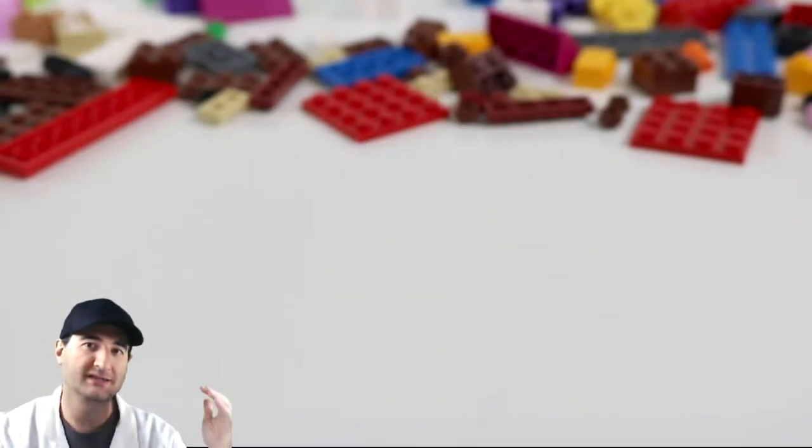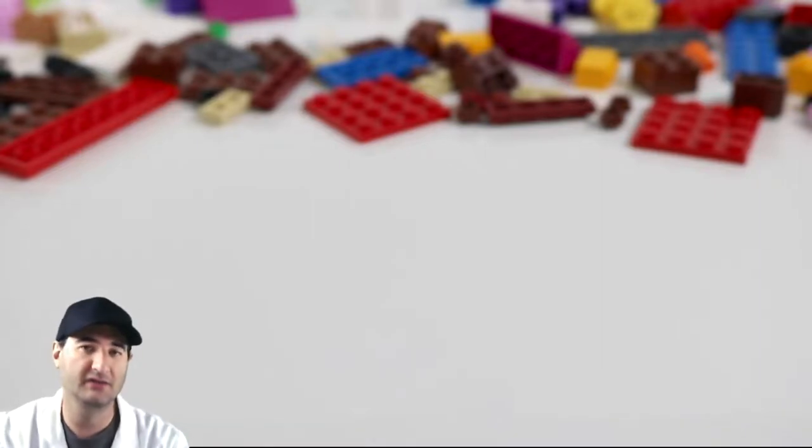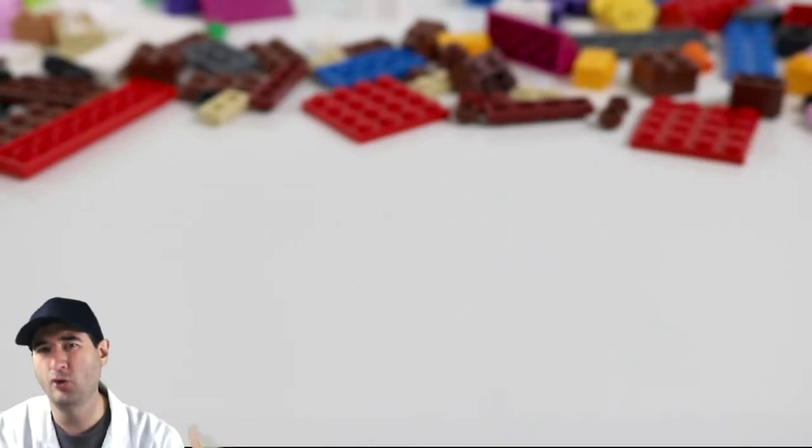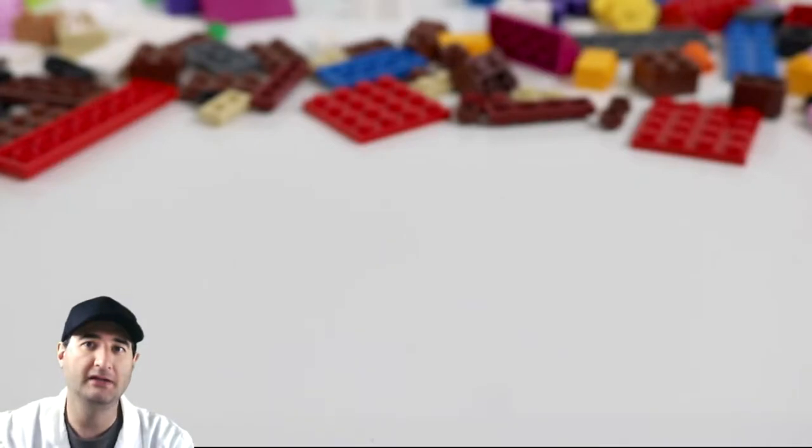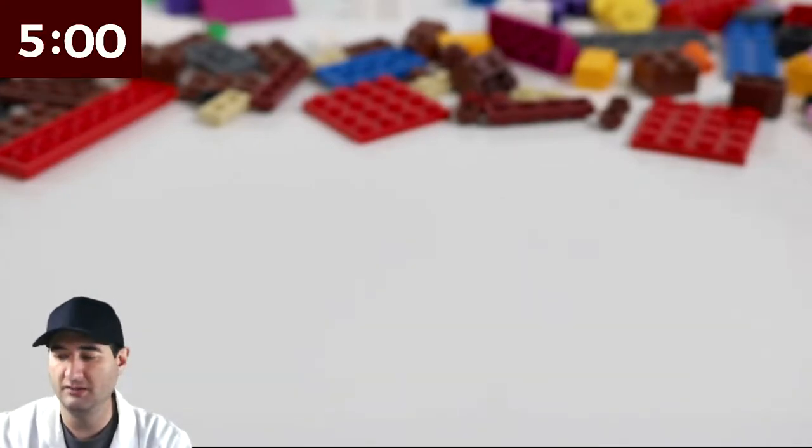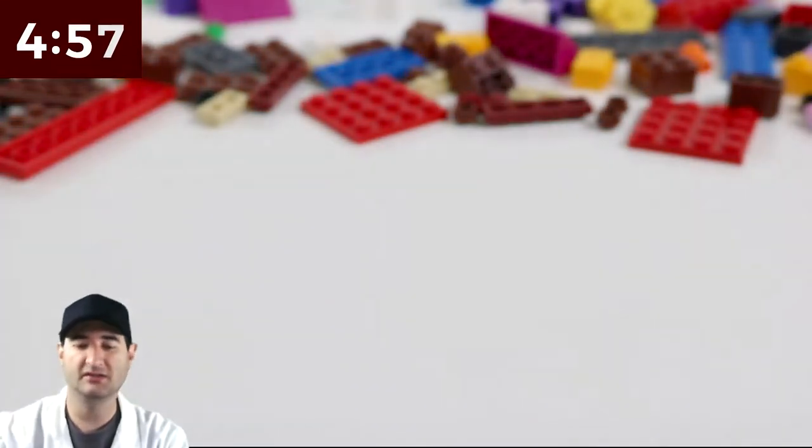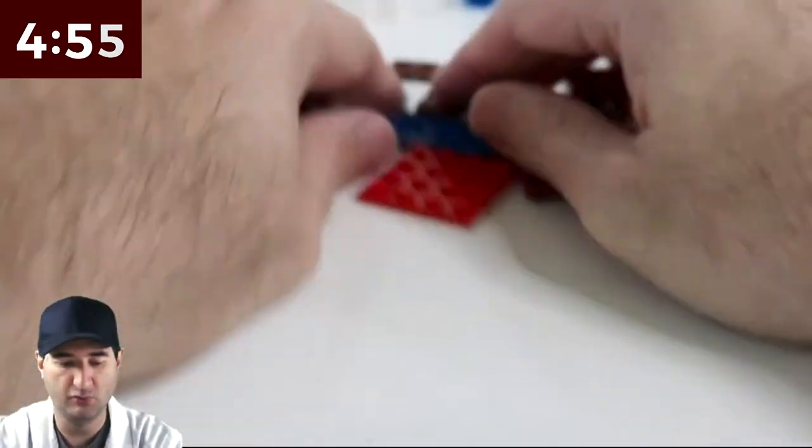So a cornucopia is a very iconic Thanksgiving item. Very difficult to build in real life. It's like a big giant cone of pastry and then you fill it with a whole bunch of goodies. And let's give it a try. Let's go ahead and build it out of Legos in five minutes. So we put five minutes on the clock and we got to build a cornucopia.